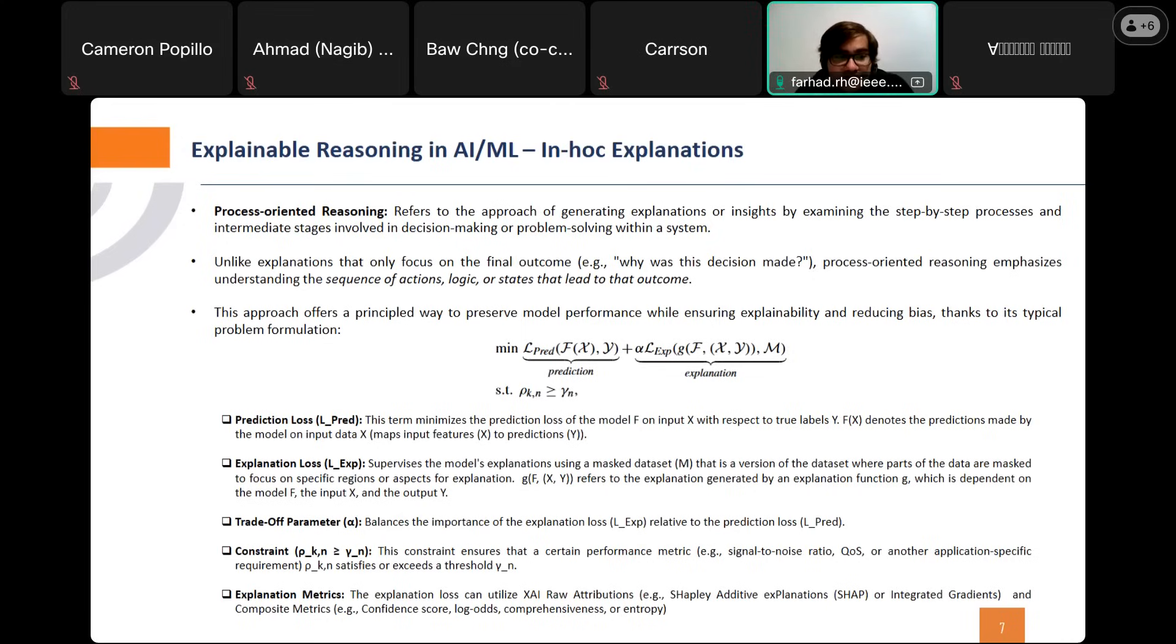And we have a constraint that this constraint ensures that the certain performance metrics, that here is rho(χ, n), satisfy or exceed a threshold, gamma n.